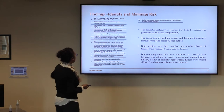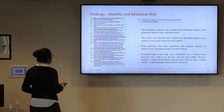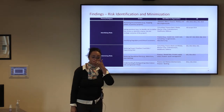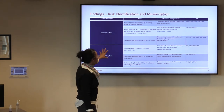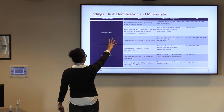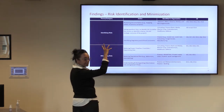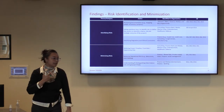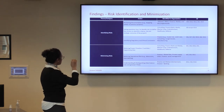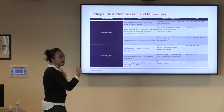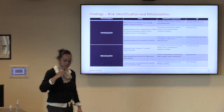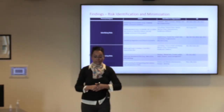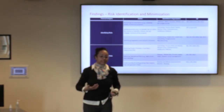In total, we found 16 risk management processes for data science projects. Another finding was that we could create two categories: actions taken to identify risk, and actions taken to minimize risk. Across participants, asking questions was a common theme — at the commencement of a project, they would sit together, brainstorm, and pave the way to the next step.